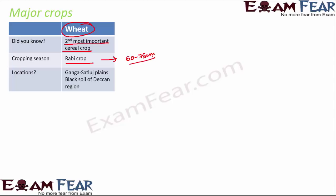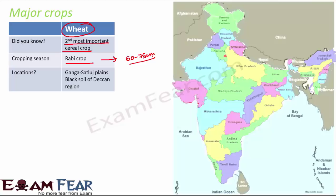Wheat needs 50 to 75 centimeters of annual rainfall. It is grown mostly in the Ganga-Satluj plains and the black soil of the Deccan region. States like Punjab, Haryana, UP, Bihar, and Delhi — the northern region with a cool winter season — are the major wheat-growing areas. Wheat is not grown in coastal areas as it doesn't need heavy rainfall.